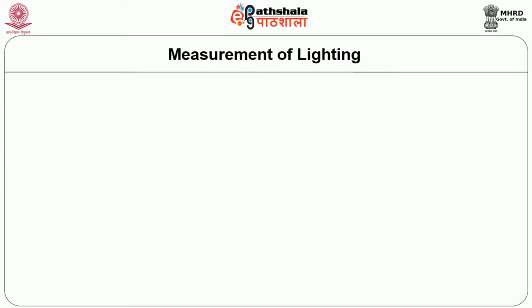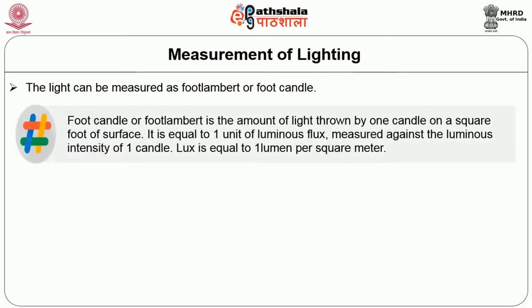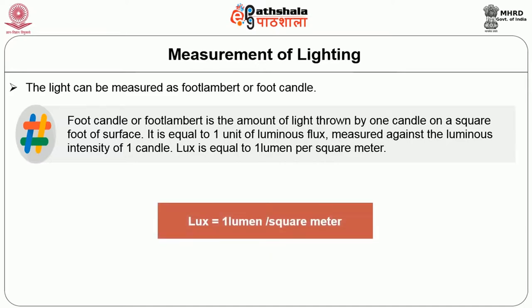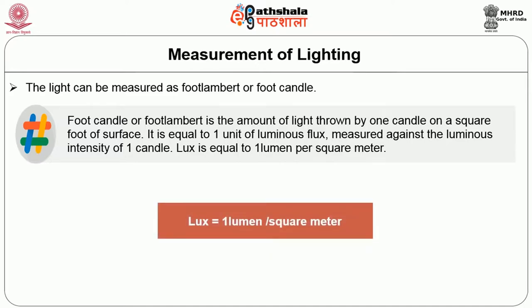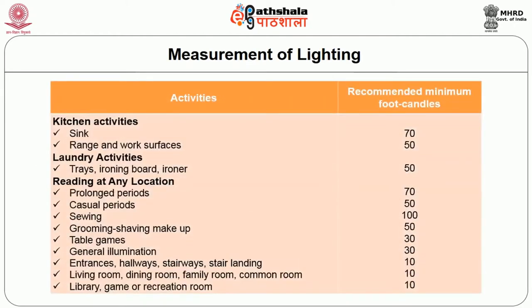Measurement of lighting: A light can be measured as foot lambert or foot candle. A foot candle or foot lambert is the amount of light thrown by one candle on a square foot of surface. It is equal to one unit of luminous flux measured against the luminous intensity of one candle. Lux is equal to one lumen per square meter.